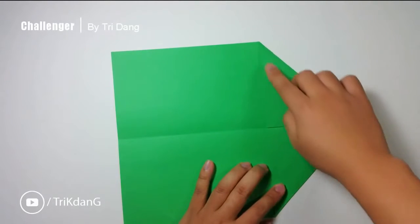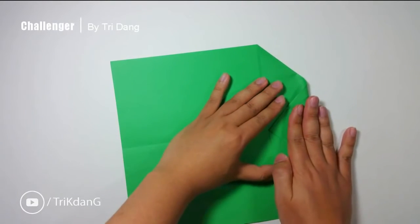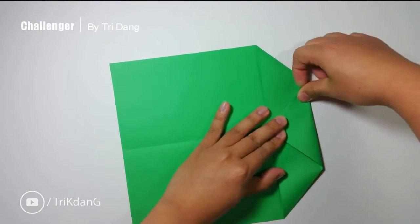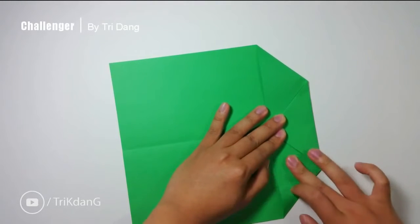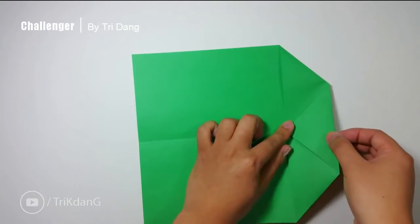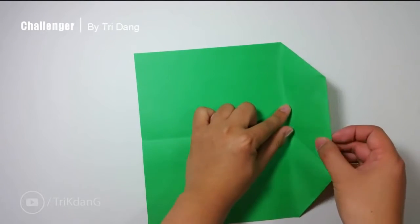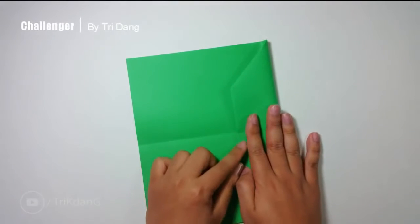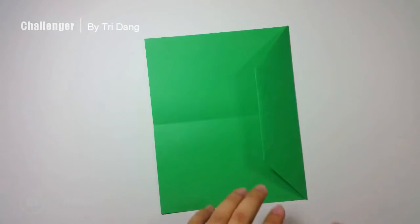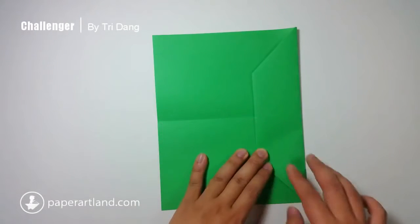Now, start from the tip here, fold it to this line. And next, I will fold the whole shape here down using this line as a reference. Make sure that this crease is lined up with this crease.